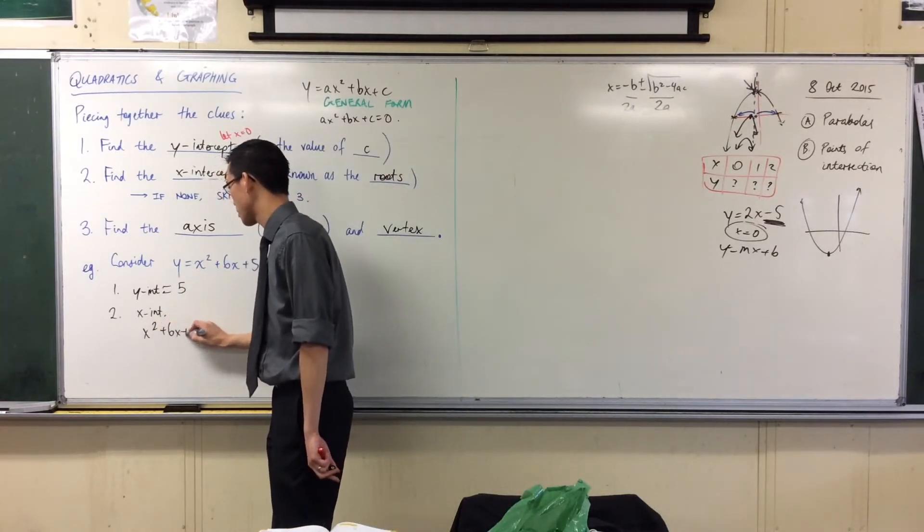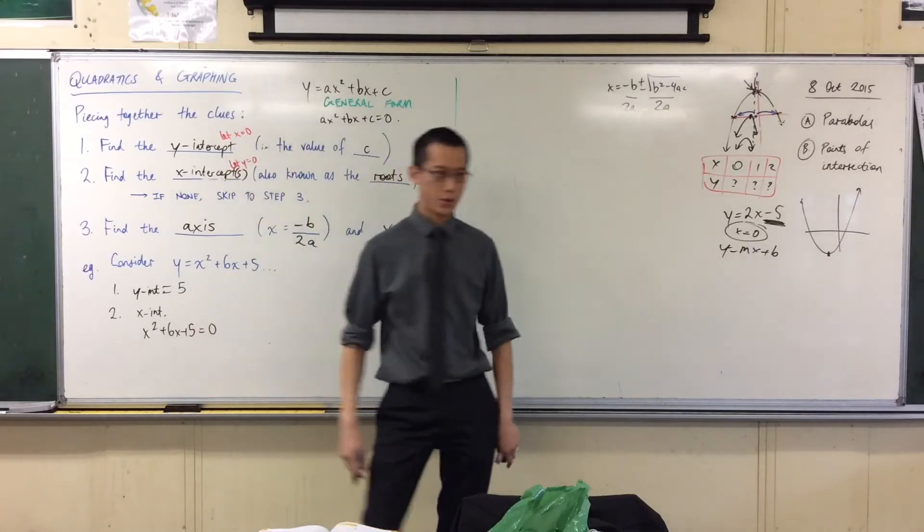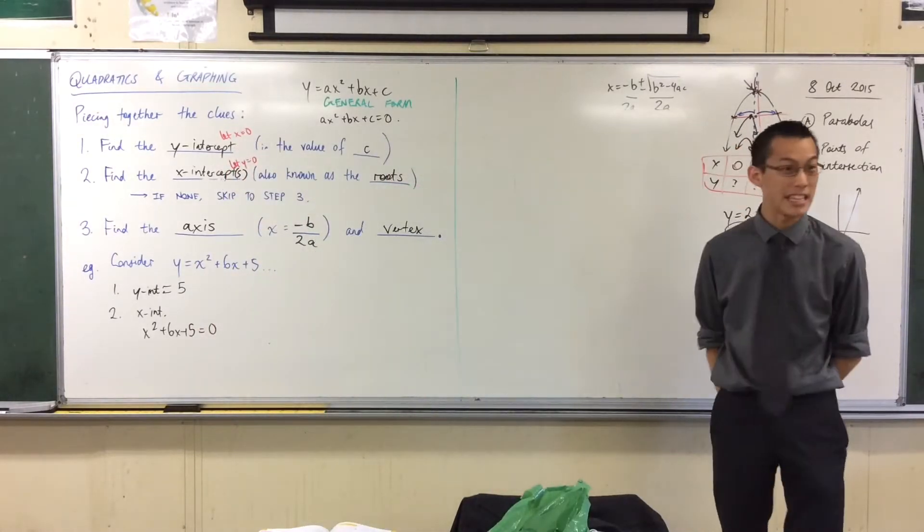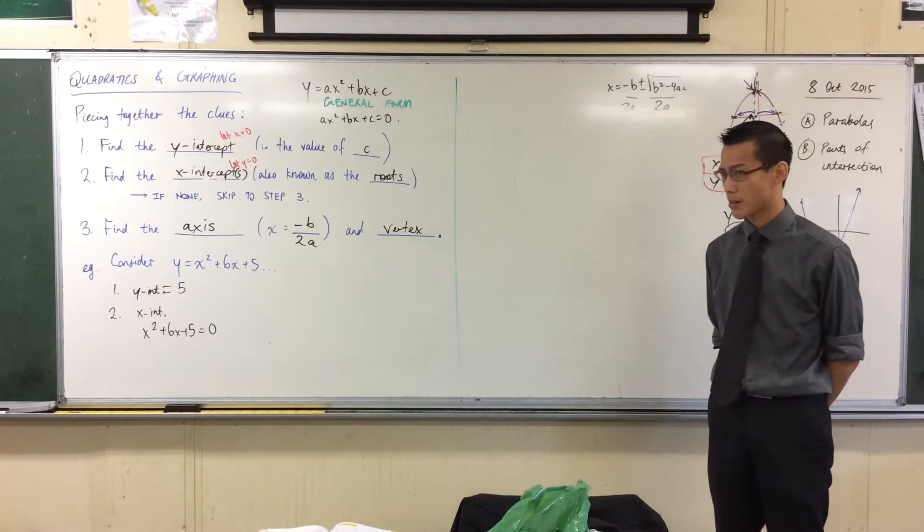x squared plus six x plus five equals zero. You did these kinds of equations to death, right? In fact, this is a really easy one. Can anyone factorize it for me?